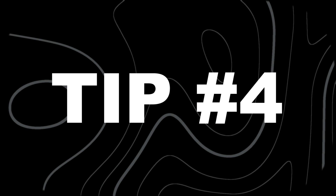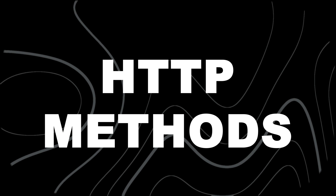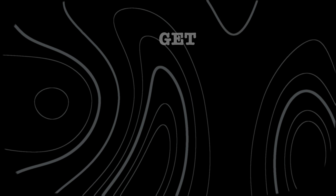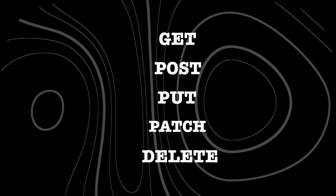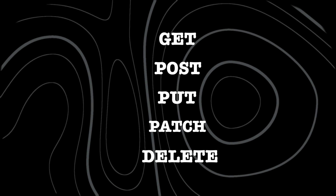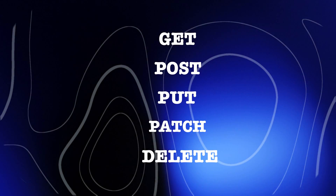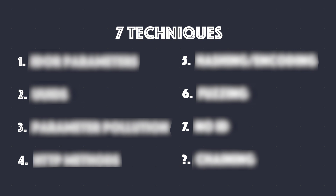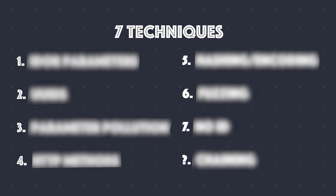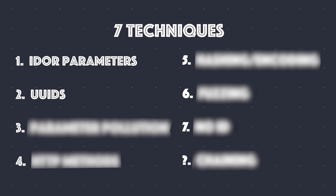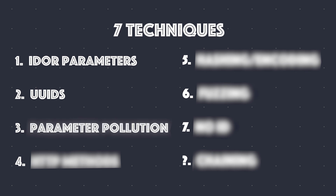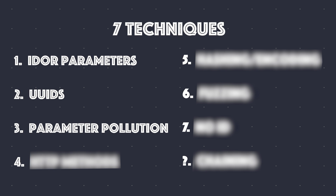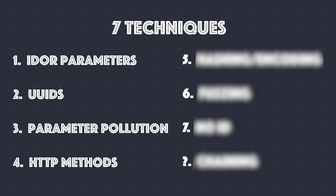Another useful tip in your IDOR hunting toolkit is to test all HTTP methods. While GET and POST are the most common, neglecting PUT, PATCH, and DELETE could mean missing out on critical vulnerabilities. To recap the first four techniques: the most common IDOR parameters, UUIDs, parameter pollution, and the usage of different HTTP methods.